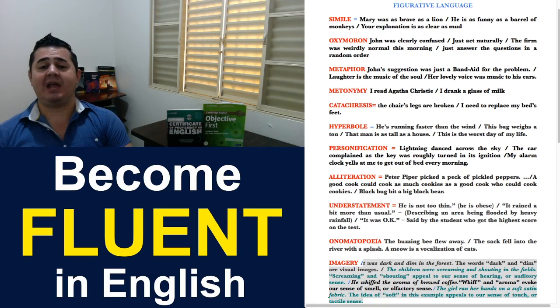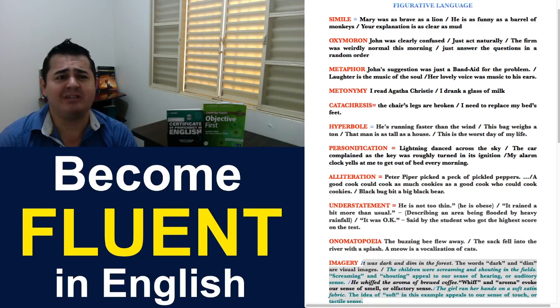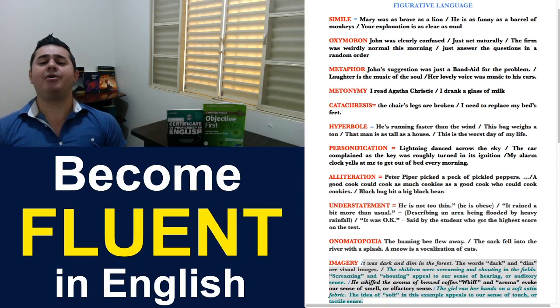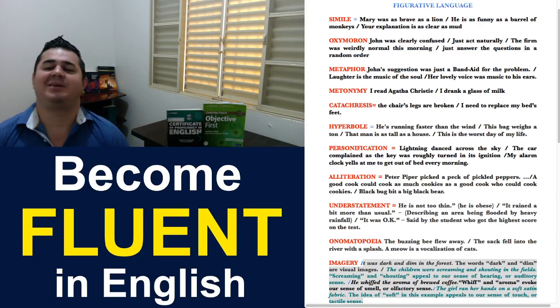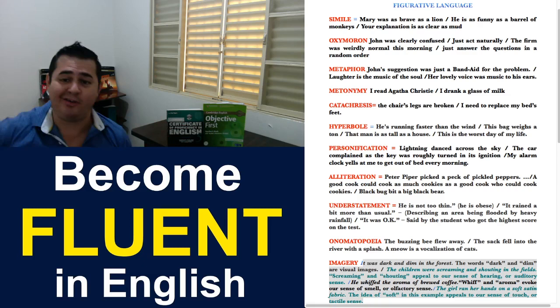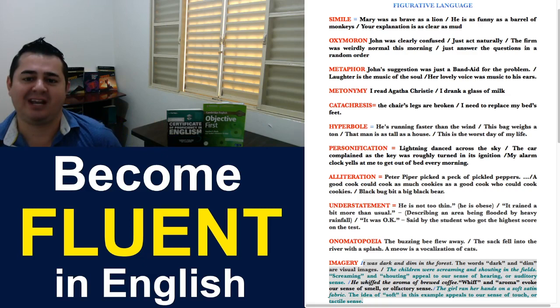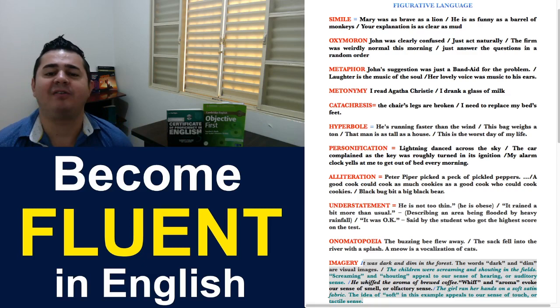Let's move to language number three, which is a metaphor, perhaps one of the most common figurative languages in English. Basically, we describe a person or an object by referring to something that has similar characteristics to that person or to that object. It's easier to see some examples. So, John's suggestion was just a band-aid for the problem. Band-aid is a very common word in the whole world, so everybody knows what band-aid is. His suggestion was a band-aid for the problem. It means that it has covered the problem. It has solved the problem temporarily.